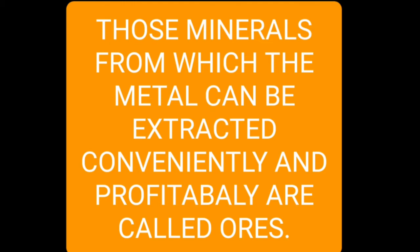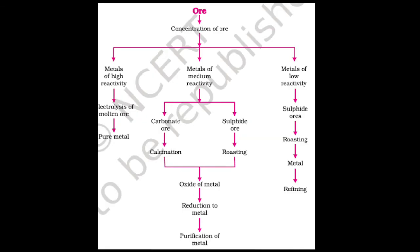You are able to see a flow chart on your screen. In the flow chart, metals are of three types: highly reactive, moderately reactive, and less reactive. If we talk about highly reactive metal, we do electrolysis to obtain the pure metal.